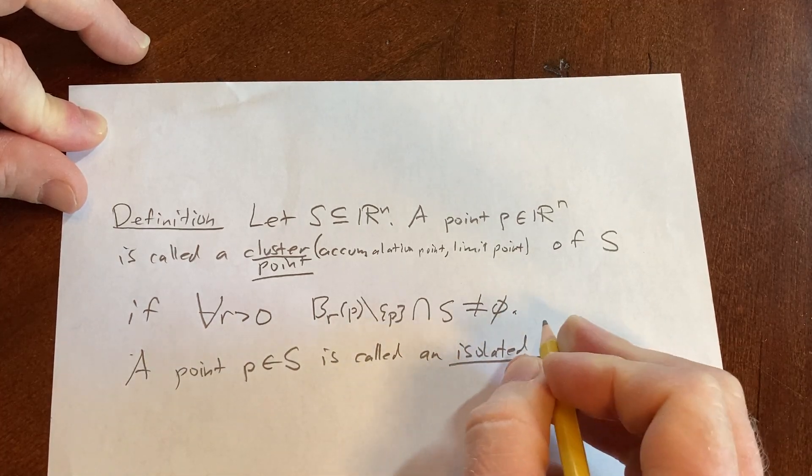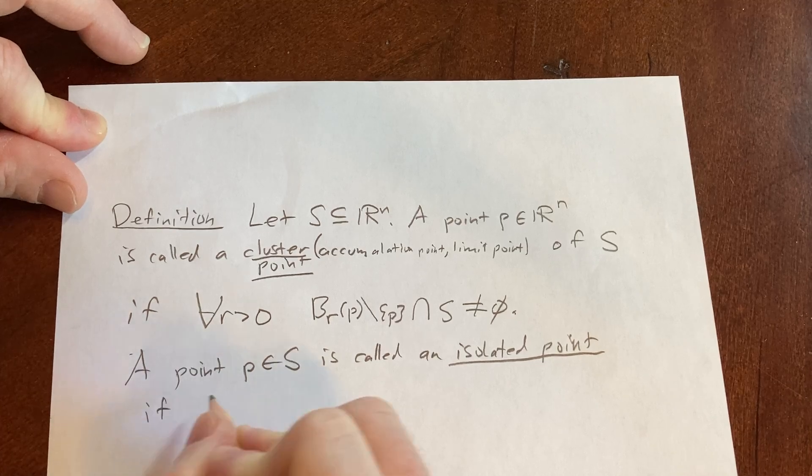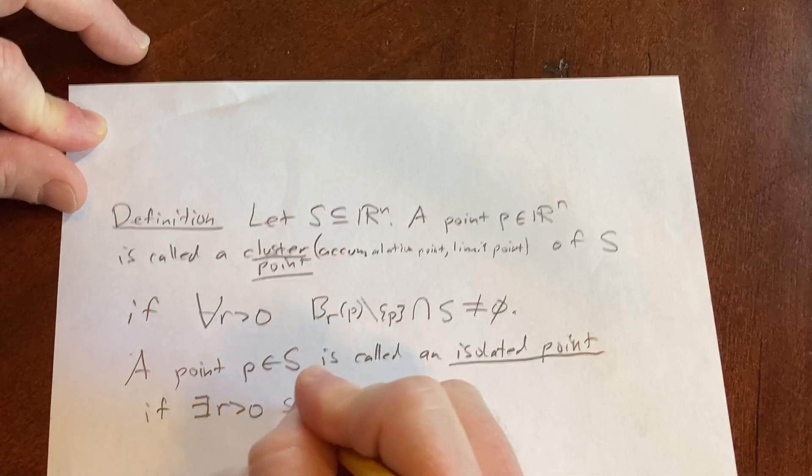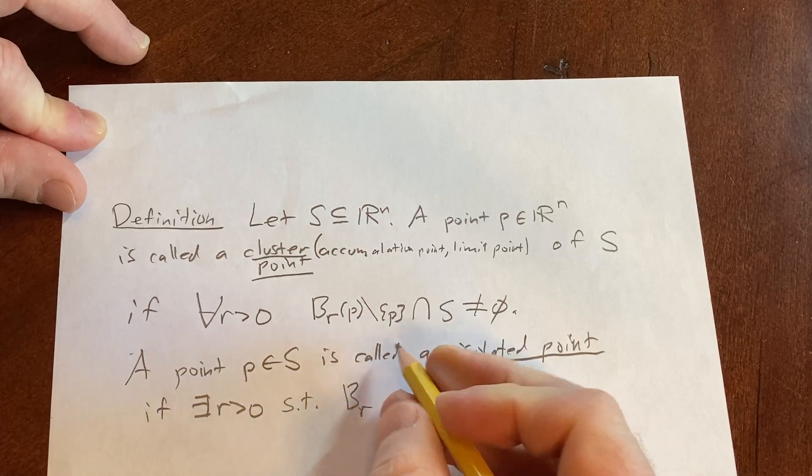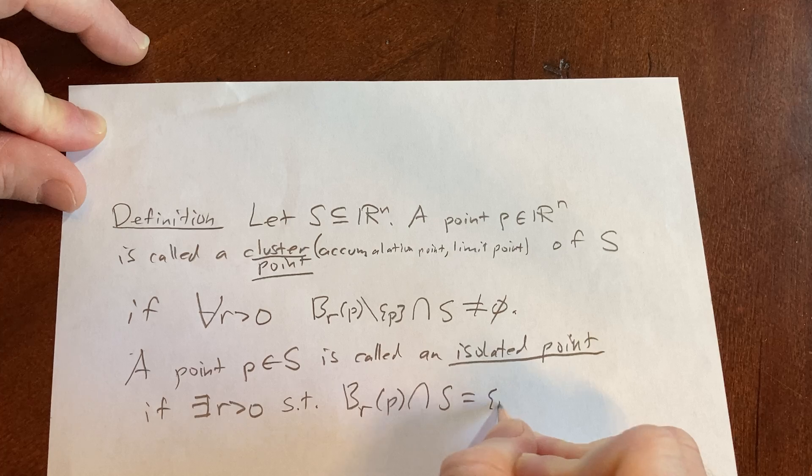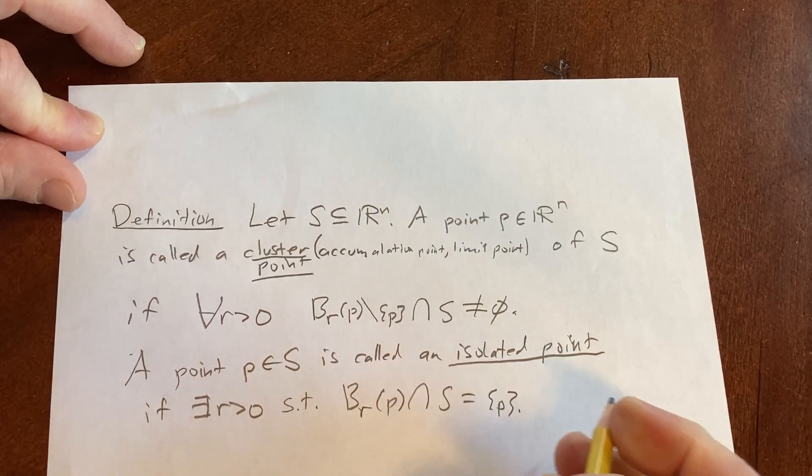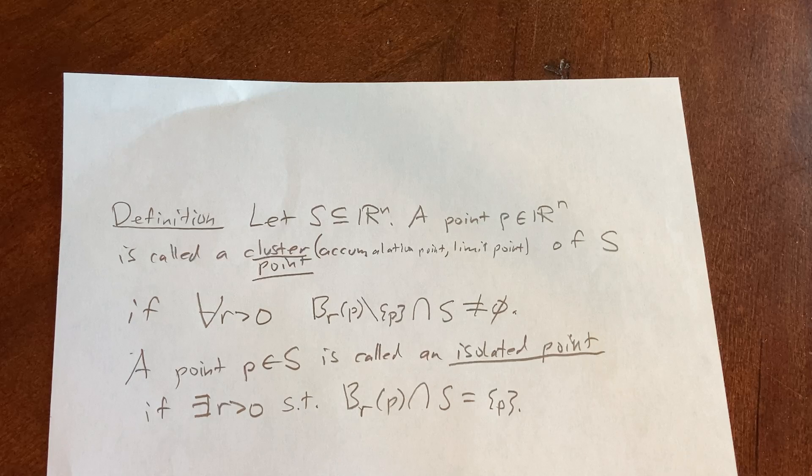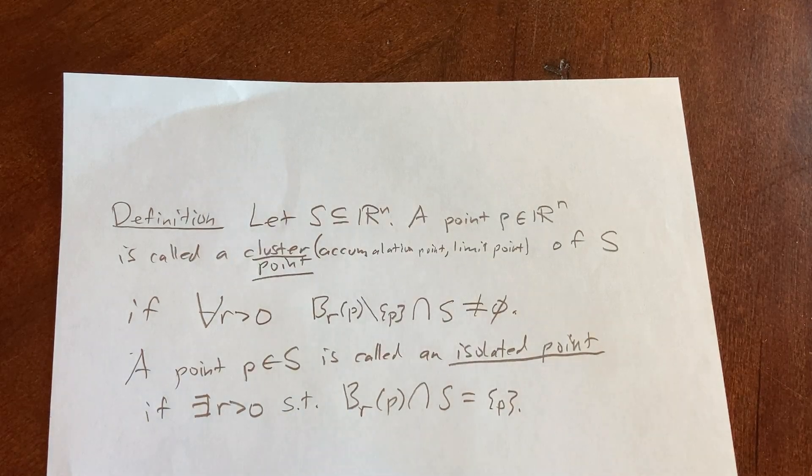if there exists an r greater than zero such that the open ball of radius r centered at P intersected with S just gives you P. That would be the definition of an isolated point. I hope this has been helpful. Take care.